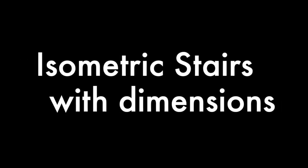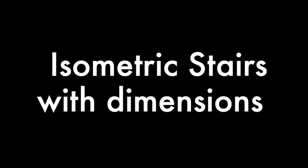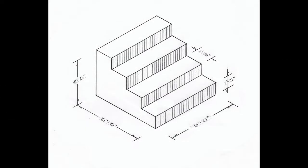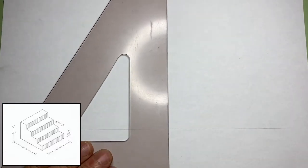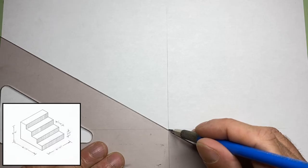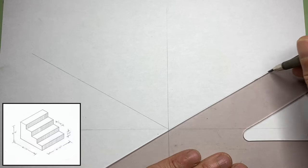In this lesson we'll be drawing a set of isometric stairs and we'll add some dimensions. We'll begin by using the t-square and drawing a horizontal baseline. Then we'll use the triangle and draw a vertical height line. Where these lines intersect we'll draw a 30-degree line to the left and a 30-degree line to the right.